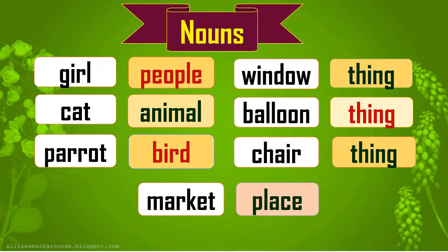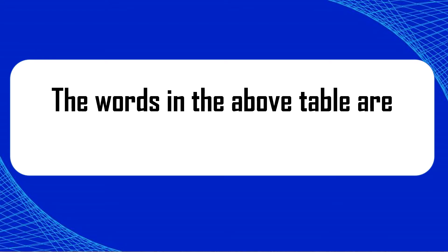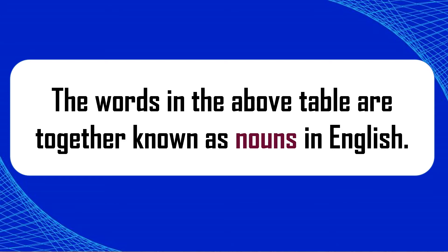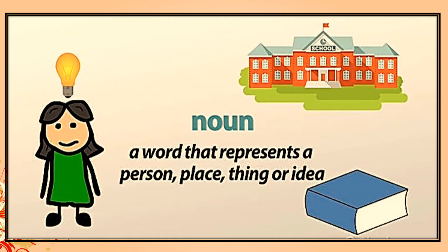Let's learn more about nouns. What are nouns? The words in the above table are together known as nouns in English. Cat, girl, window, table, balloon — all of these are nouns. A word that represents a person, place, thing, or idea is called a noun.